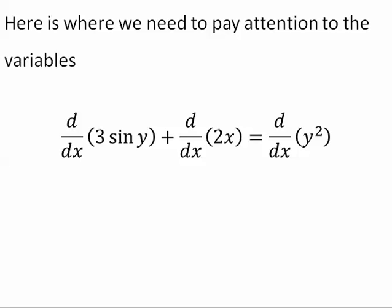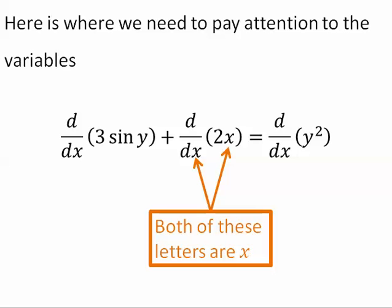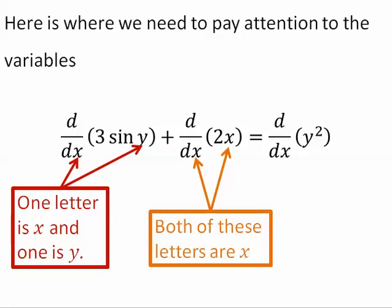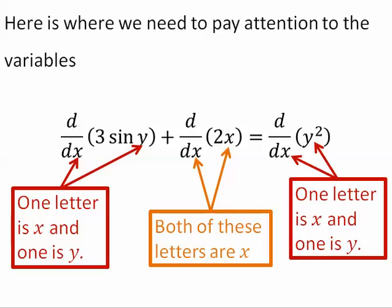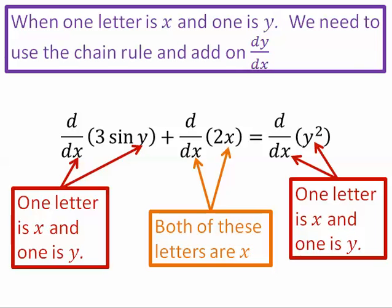Here is where we need to pay attention to the variables. For this middle term, both of these letters are x. I have a function of x, and I'm taking the derivative with respect to x. For the first term, I have a function of y, and I'm taking the derivative with respect to x. And for the last term, again, I have a function of y, but I'm taking the derivative with respect to x. When the function is in terms of y, and the derivative is in terms of x, you're going to need to use the chain rule.